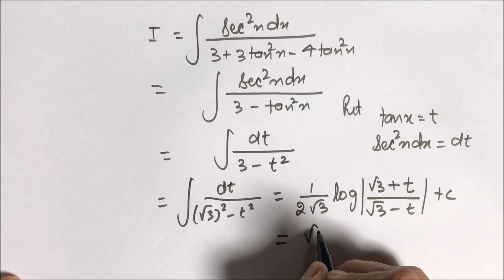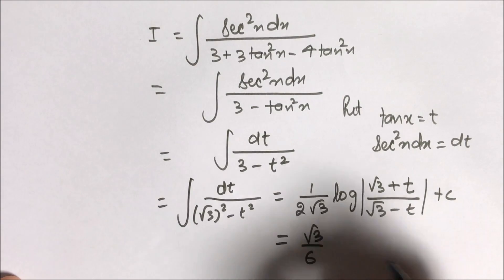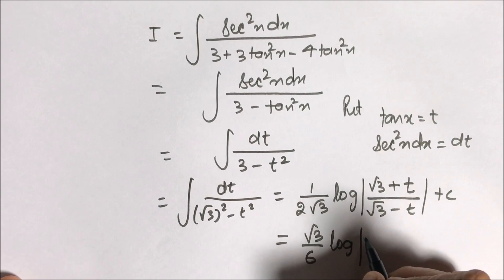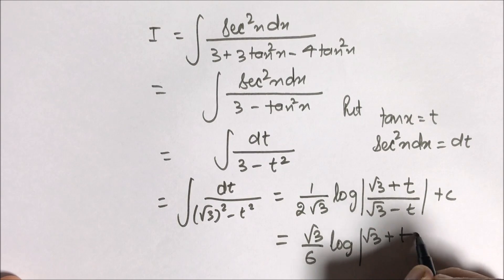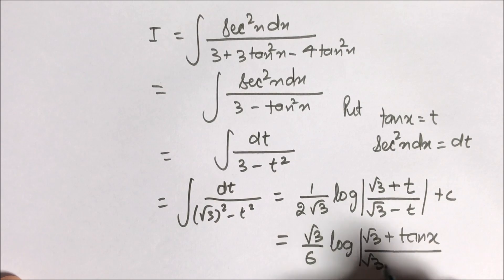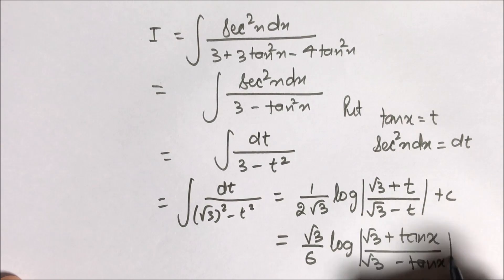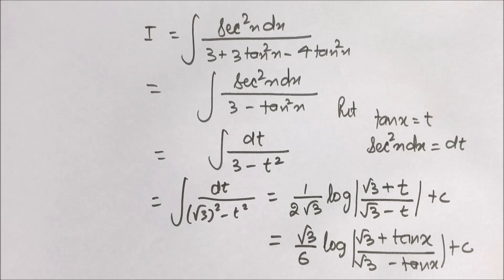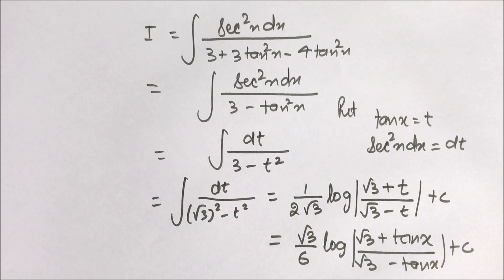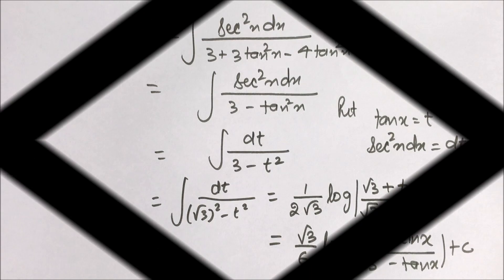So the final answer is (√3/6) log|(√3 + tan(x))/(√3 − tan(x))| + C. With a little practice you can become a master in indefinite integration. Keep watching, keep sharing, and do subscribe to our channel.